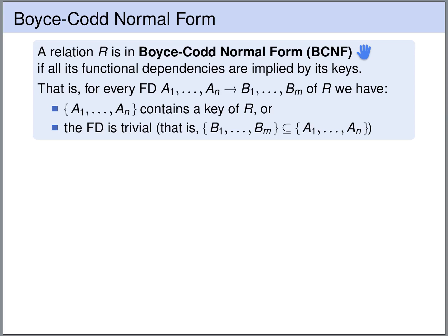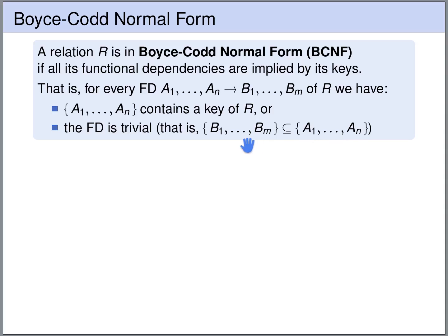So what does this mean? For every functional dependency of R, one of the following conditions must hold: either the left-hand side of the functional dependency contains a key of the relation R, or the functional dependency is trivial — meaning the right-hand side is a subset of the left-hand side.